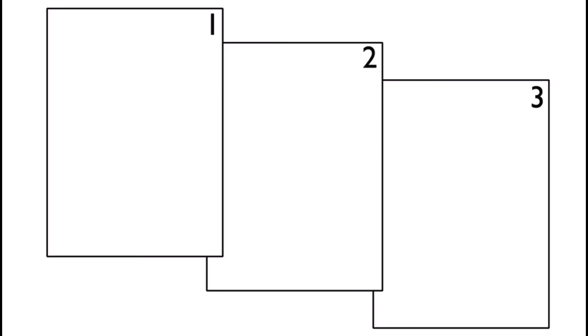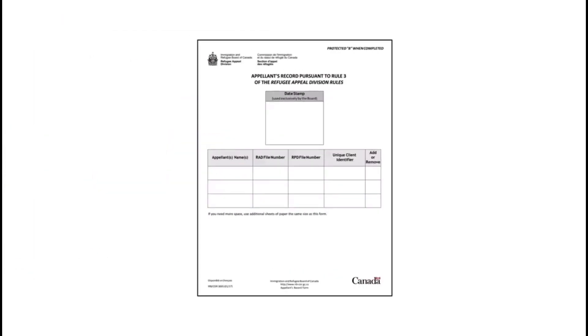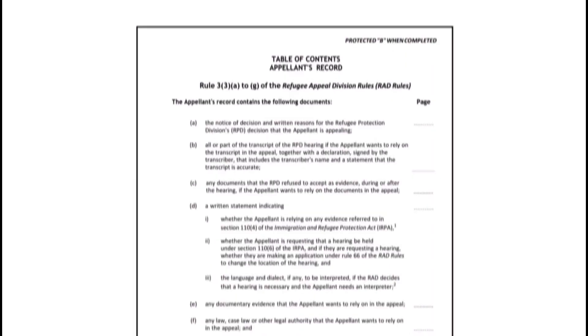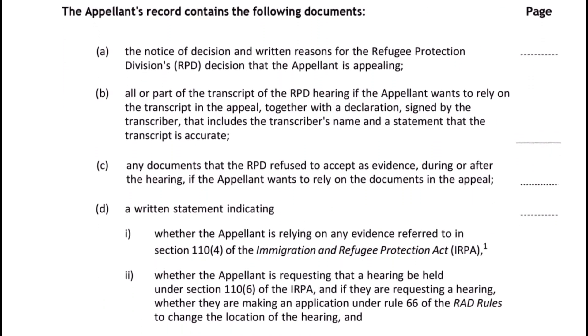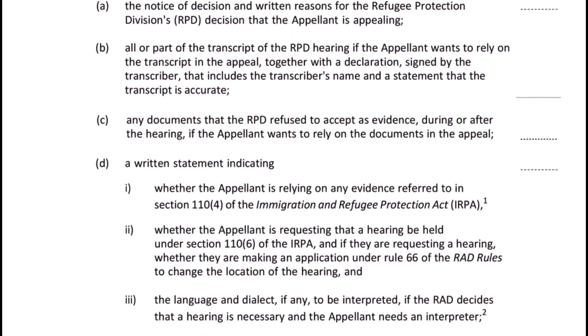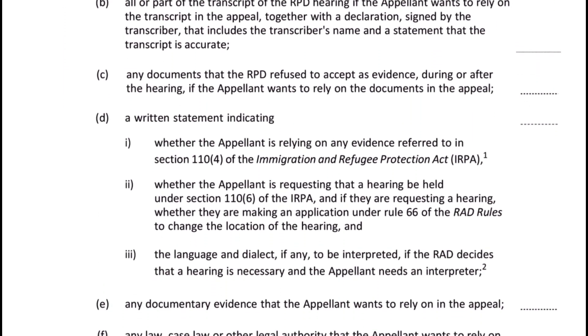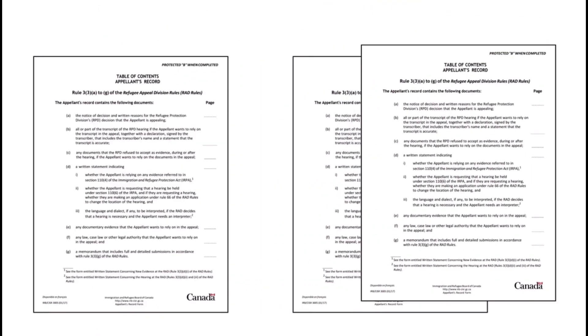Once you have placed all your documents in the correct order, number the pages consecutively and place the cover page and the table of contents at the top. Then fill in your table of contents with the page numbers that correspond with each item. Be sure to make two additional photocopies of this entire package.